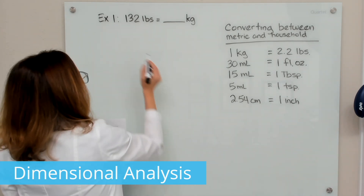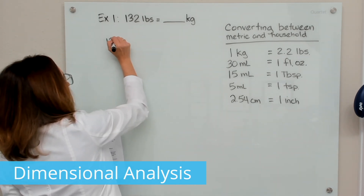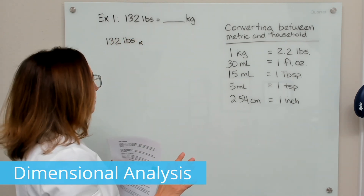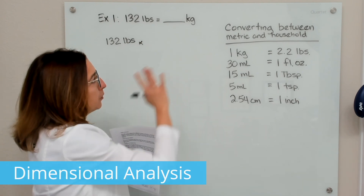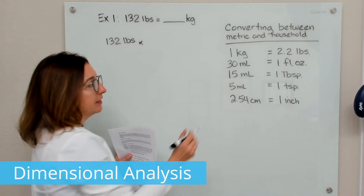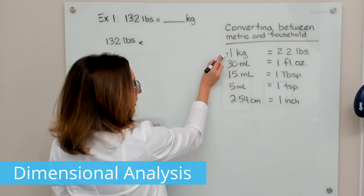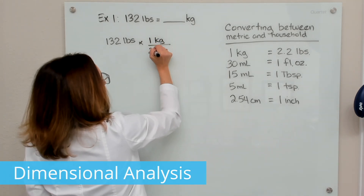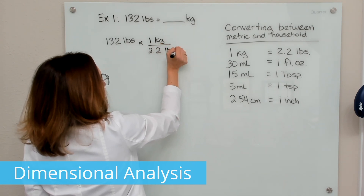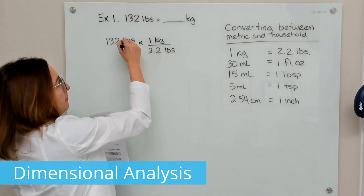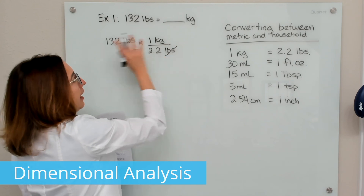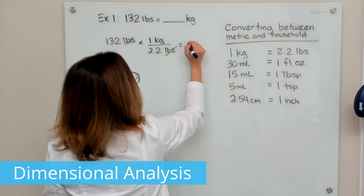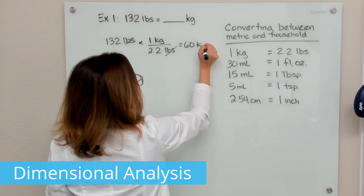With dimensional analysis, we want to first write down our current units of measure, and then multiply times the appropriate conversion factor. In this case, we need one kilogram equals 2.2 pounds. I set it up so that my pounds can cross off, and when I multiply this out, I end up with kilograms. So in this case, we end up with 60 kilograms.